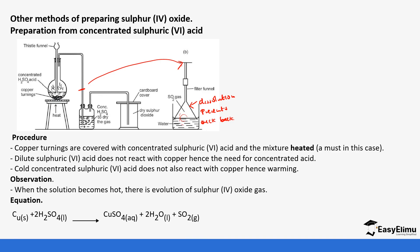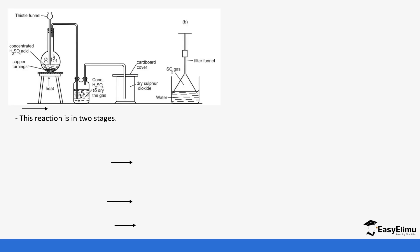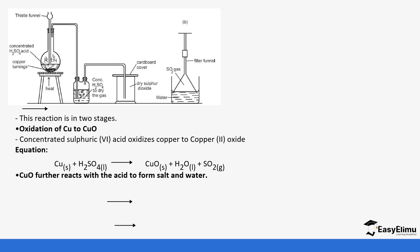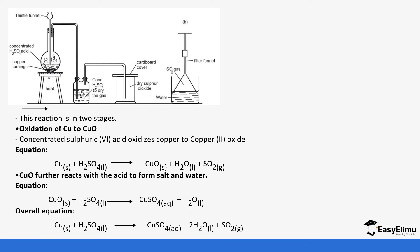To summarize so far: the first method uses dilute hydrochloric or sulfuric acid with sodium sulfite; the second uses concentrated sulfuric acid with copper metal. The reaction with copper occurs in two stages: copper is first oxidized to copper(II) oxide, then copper oxide reacts with the acid to form salt and water. The overall equation is: copper plus sulfuric acid forms copper sulfate, water, and sulfur dioxide.